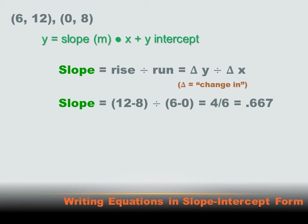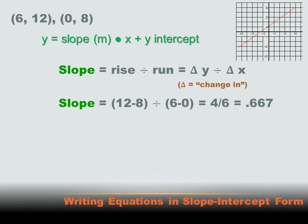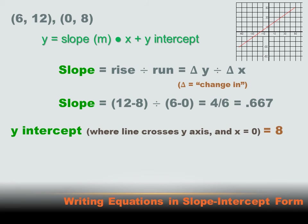Now we know the slope. Can we figure out the y-intercept? The y-intercept is where the line crosses the y-axis, where x equals zero. So if I know a coordinate pair where x is 0, the value of y in that pair is the y-intercept. In this case, one of our points is (0, 8), so the y-intercept is 8. Now I know both the slope and y-intercept, so I can write the equation.